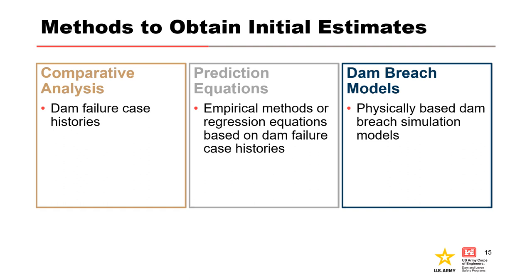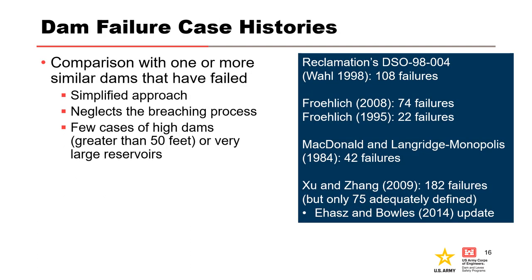All of these methods are viable techniques for estimating breach characteristics. However, each of these methods has strengths and weaknesses and should be considered as a way of estimating the parameters and not used as absolute values. If the dam under consideration is very similar in size and construction to one or more dams that have failed, and the failures are well documented, appropriate breach parameters or peak outflows may be estimated by comparison. Comparative analysis is a simplified approach that entirely neglects the breaching process to use case study data similar to the dam under consideration to develop direct estimates of the dam's breach parameters.